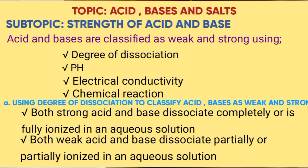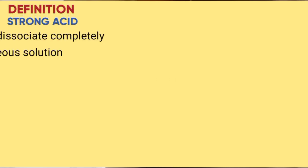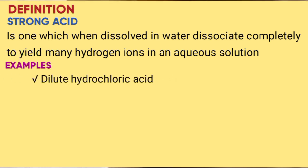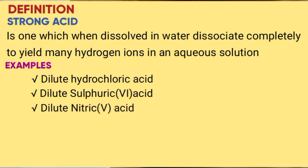Definition of a strong acid. A strong acid is one which, when dissolved in water, dissociates completely to yield many hydrogen ions in an aqueous solution. Examples include hydrochloric acid, sulfuric acid, and nitric acid.